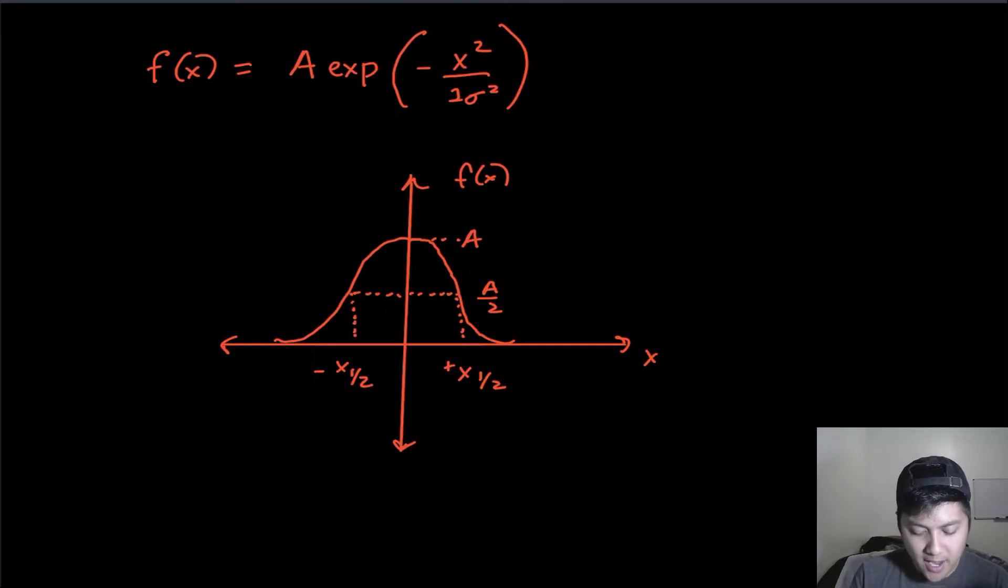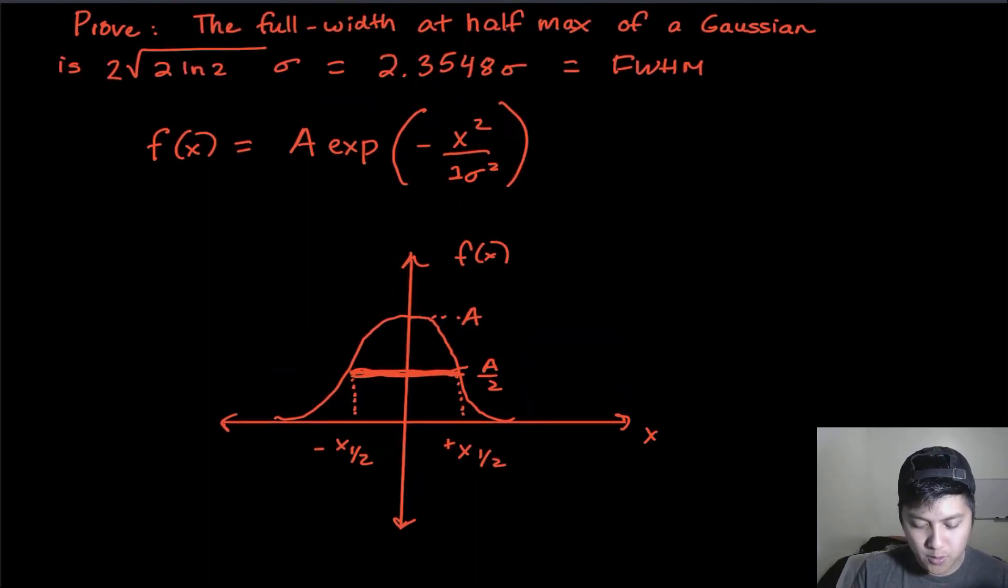as I've drawn here. So the full width at half max is just this length right here. It's the distance between the two halfway points where the function drops off to half of its maximum value. So we're going to show that it's equal to this quantity right there. So let's get started.